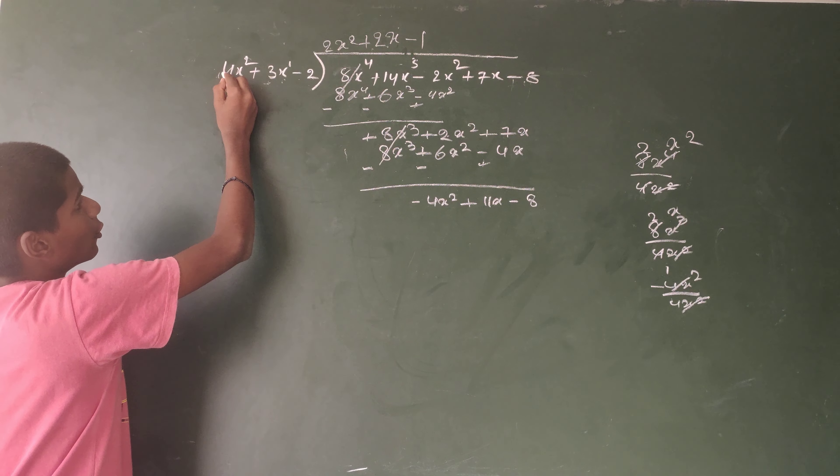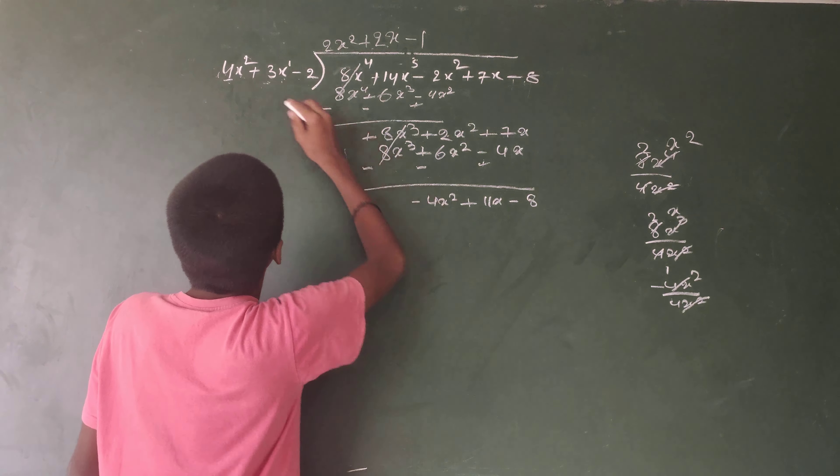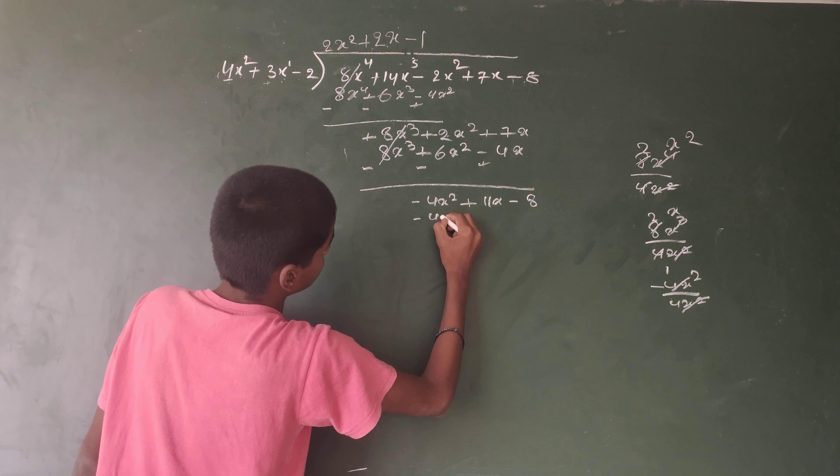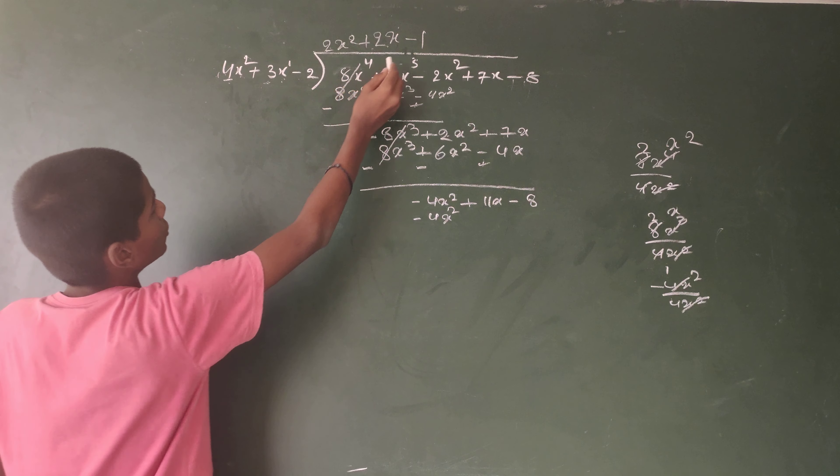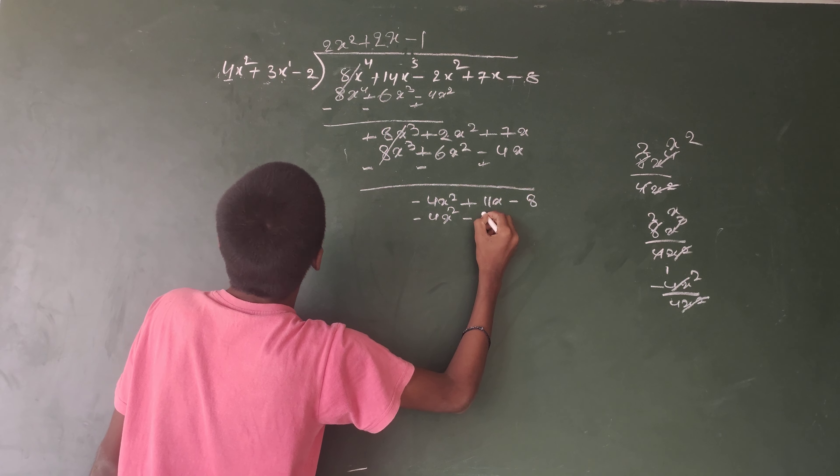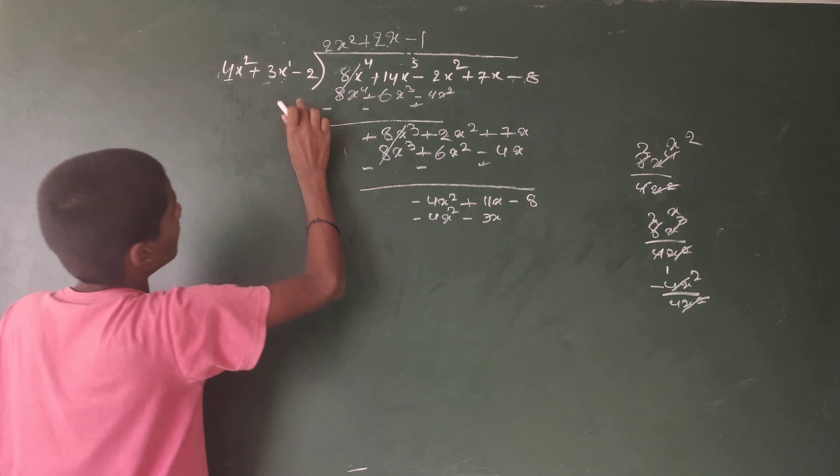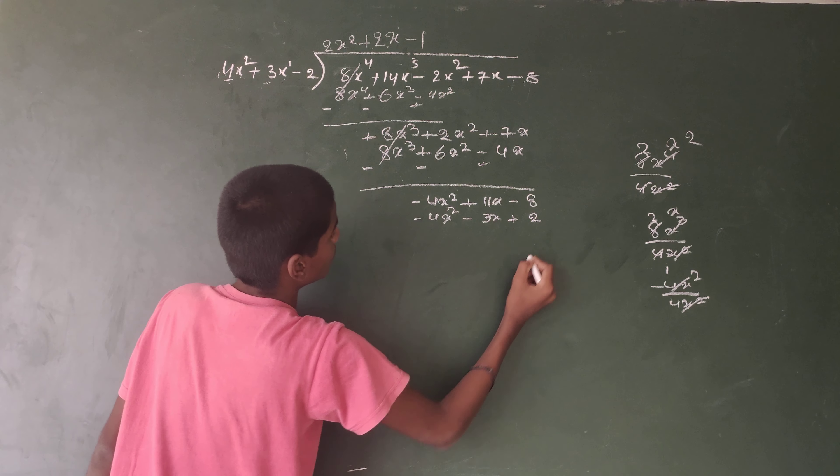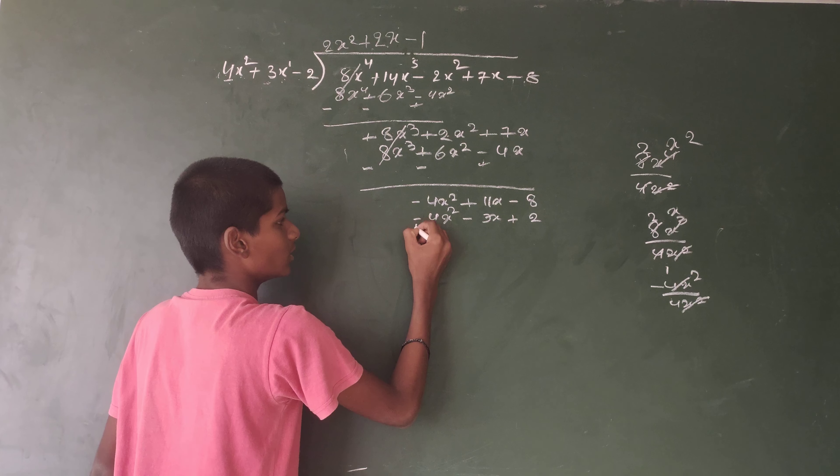4 times minus 1 is minus 4x². Plus 3x times minus 1 is minus 3x. Minus 2 times minus 1 is plus 2. Here symbols change.